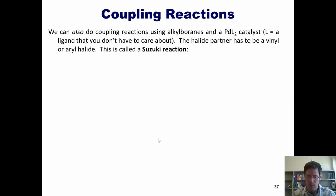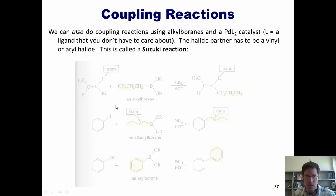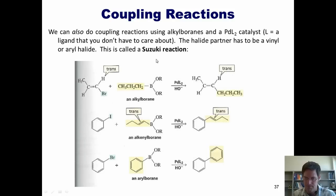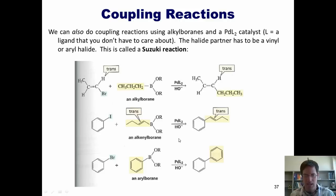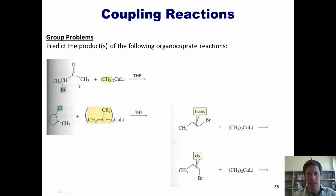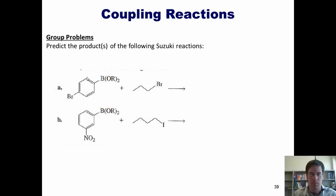We can also do coupling reactions using alkyl boranes in what is called a Suzuki reaction. Alkyl halides in which the halogen is on an SP2 hybridized carbon can have that halogen replaced with an alkyl group from a borane by treating it with catalytic palladium and hydroxide. Here are some problems: predict the products of the following organocuprate reactions, and predict the products of the following Suzuki reactions.